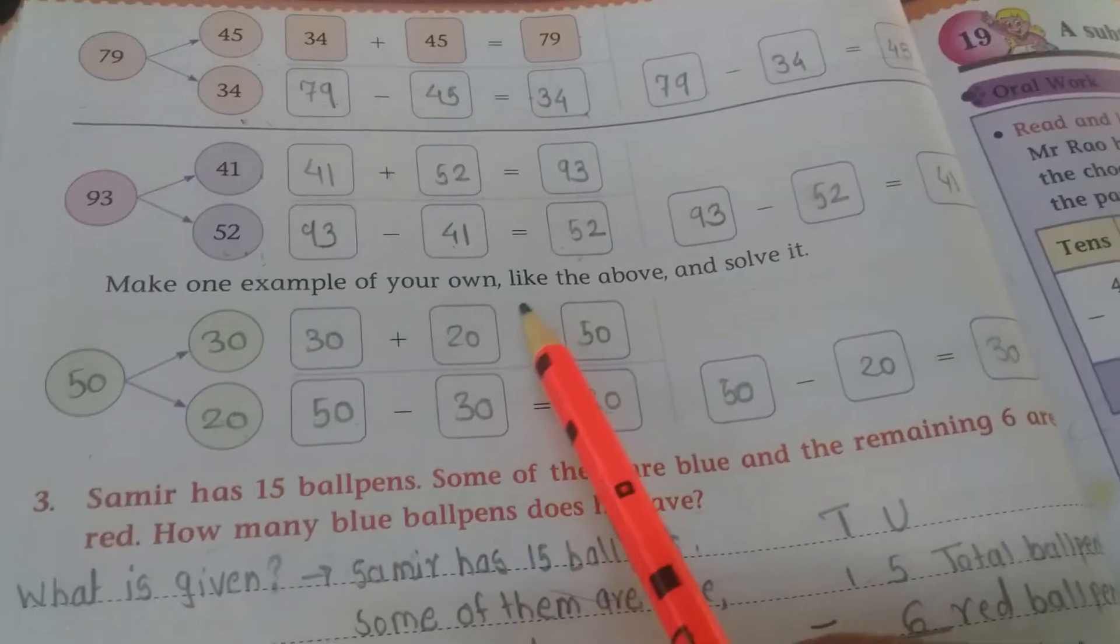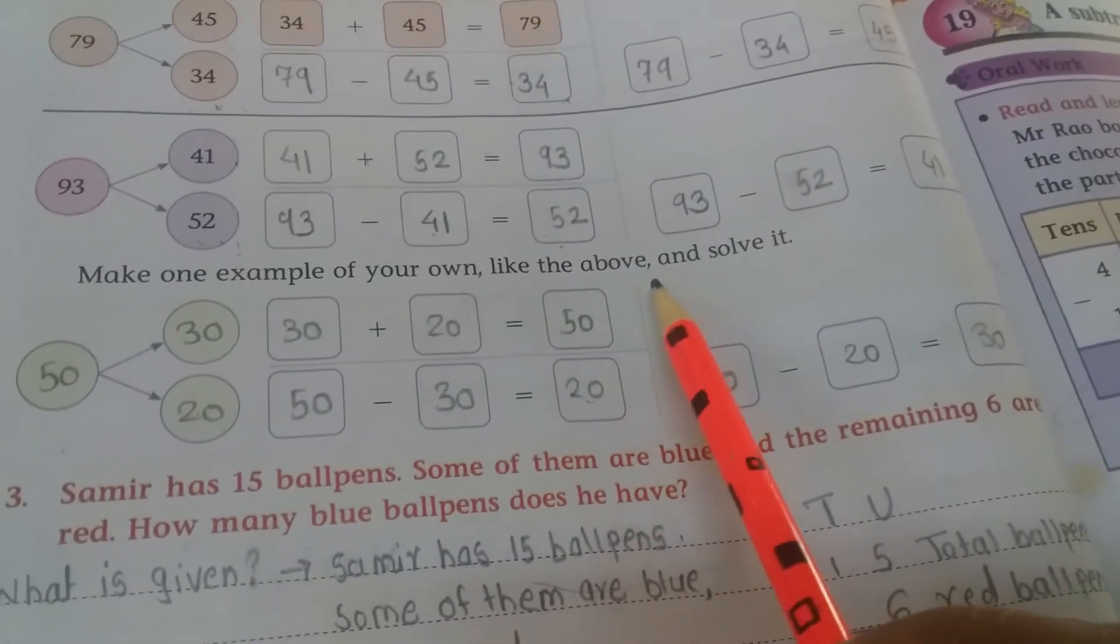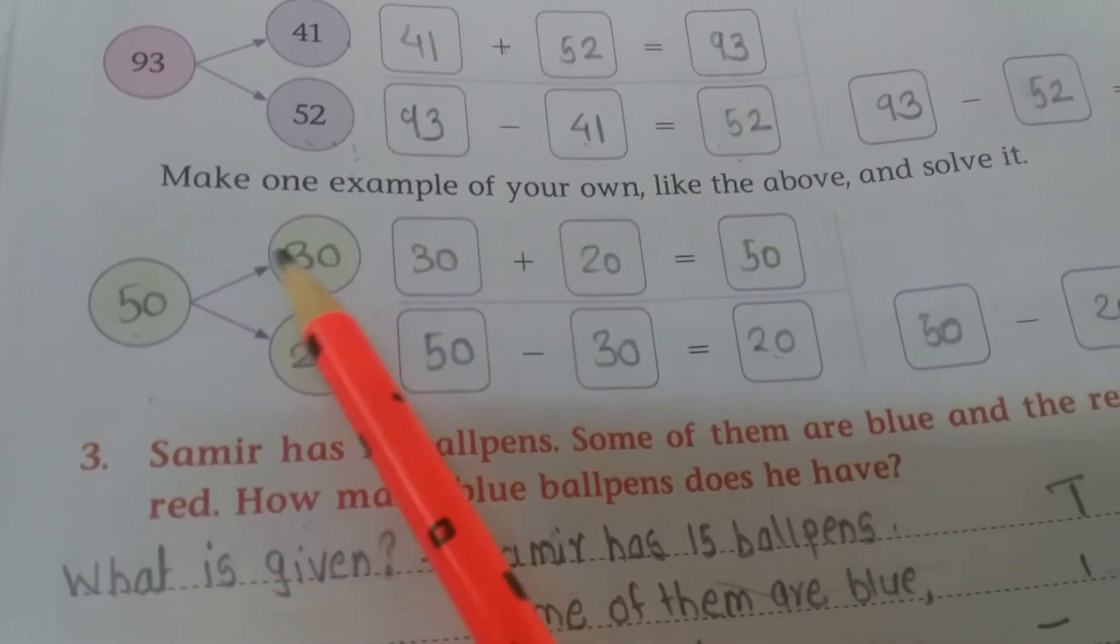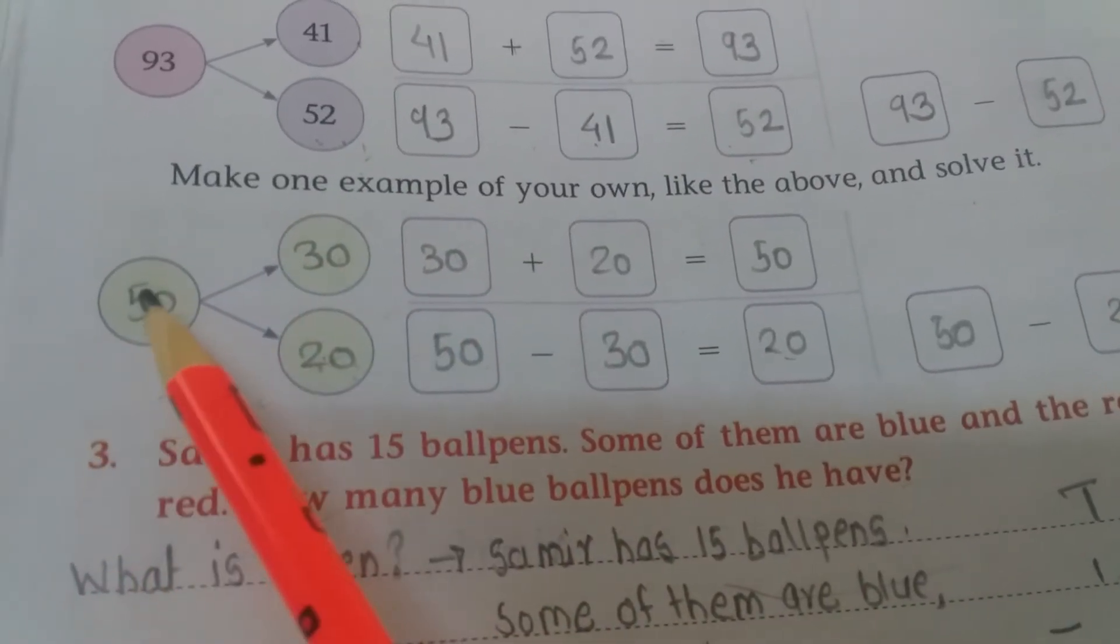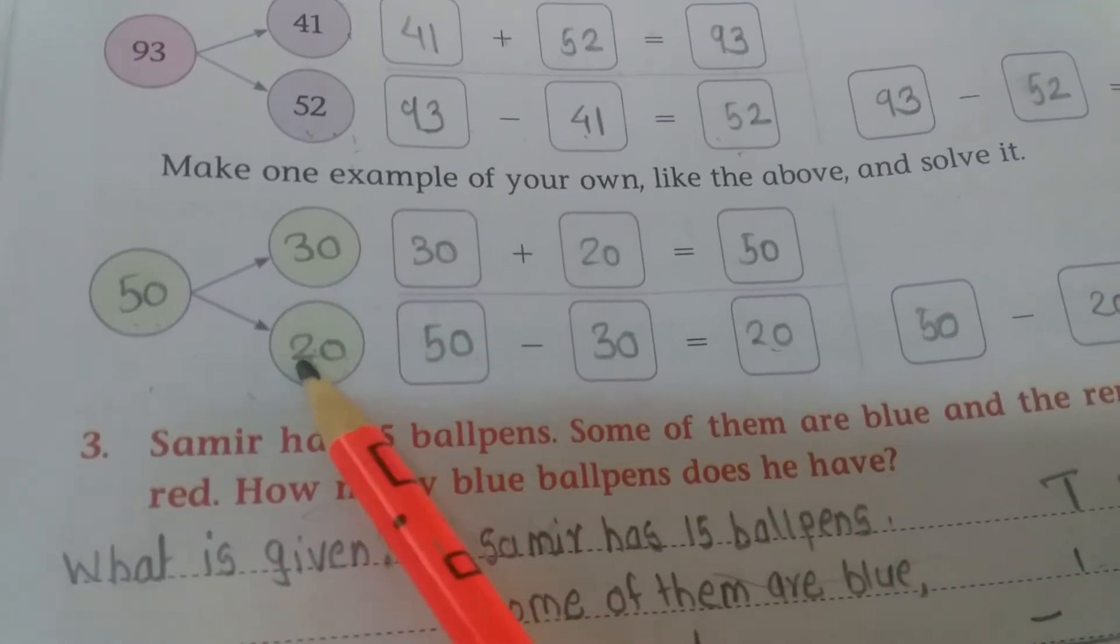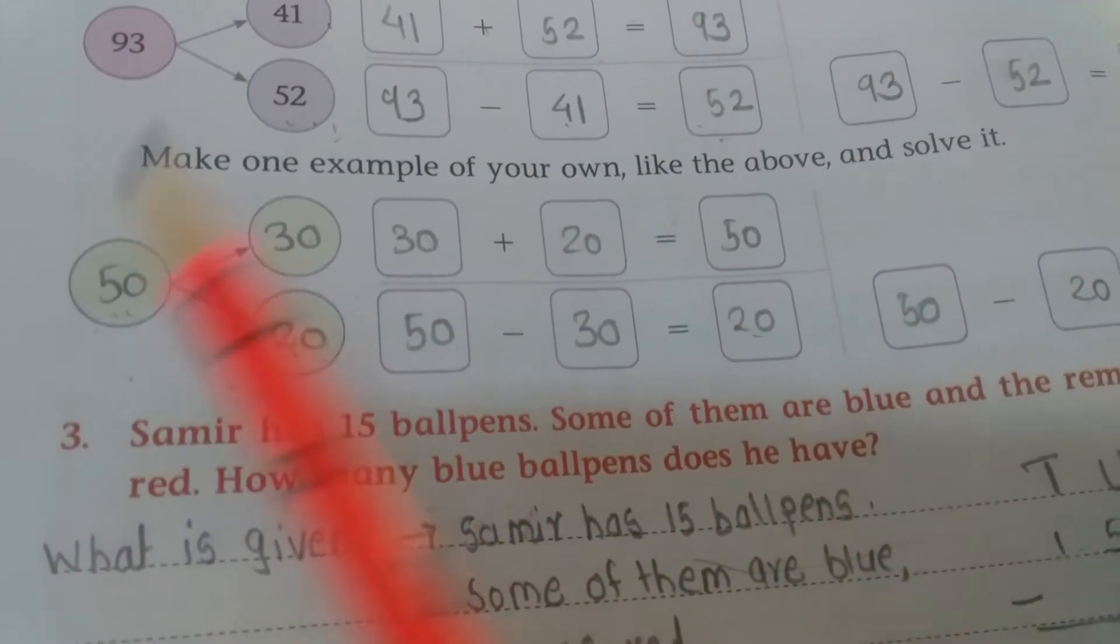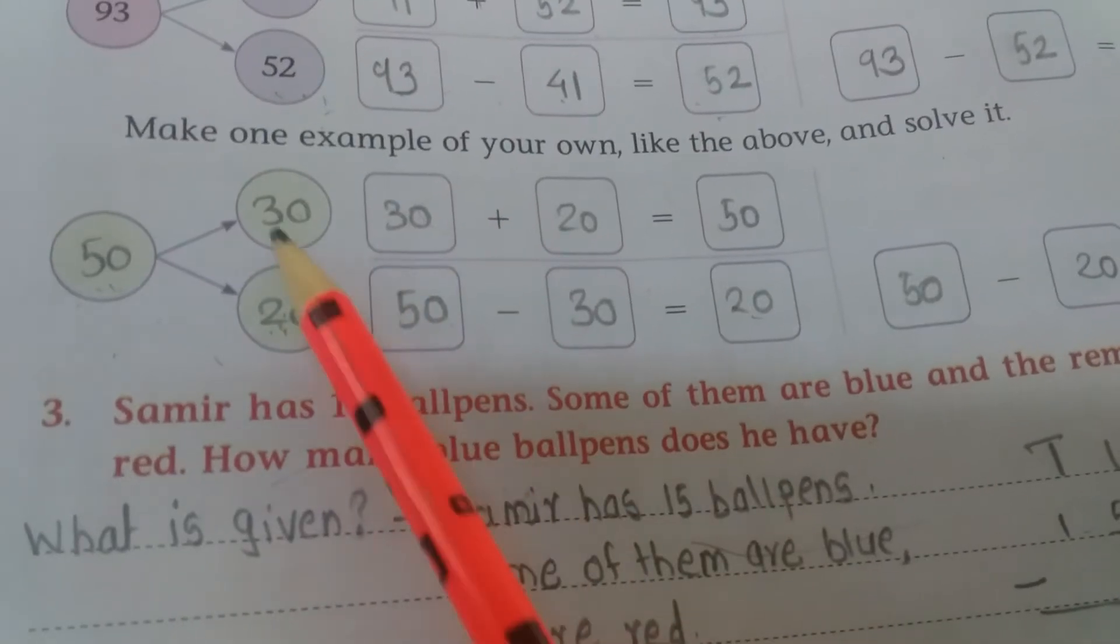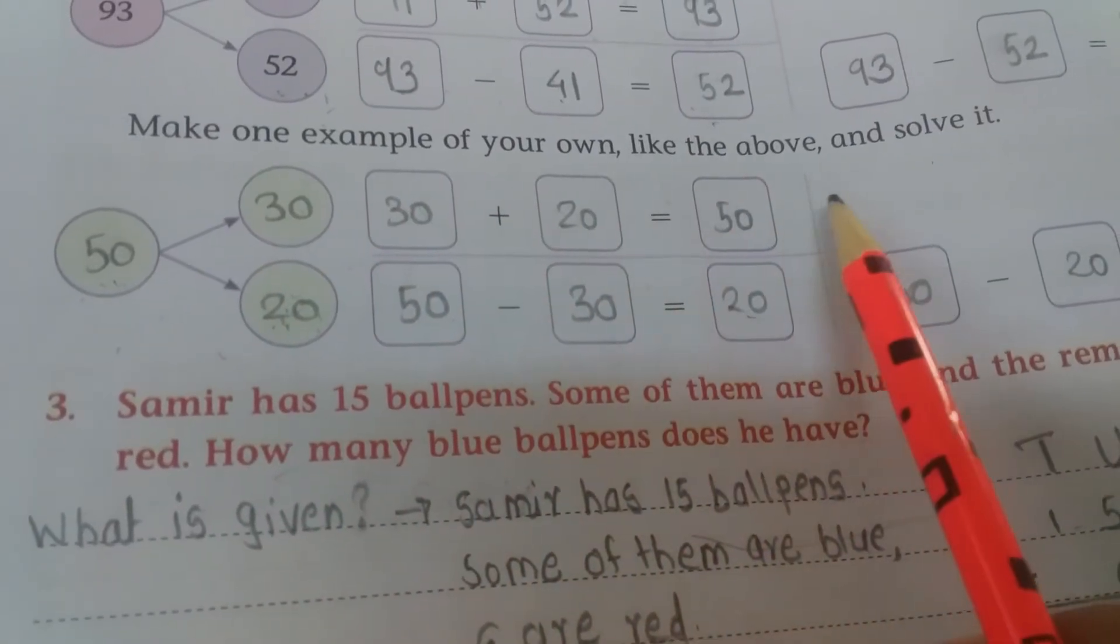Now make one example of your own like the above and solve it. You can take two numbers, you can take two numbers like that way, whose addition is this number. Now I taken 30 and 20, then this addition is 50, so I written here 50. Now see children, 30 plus 20 is equal to 50.